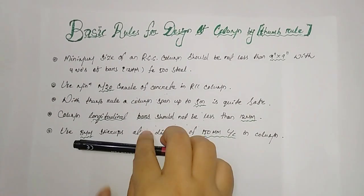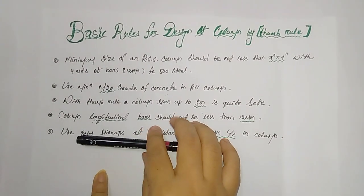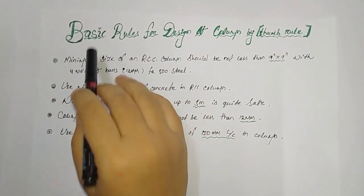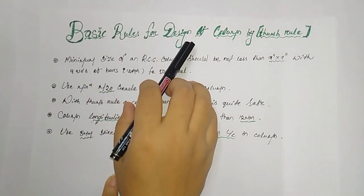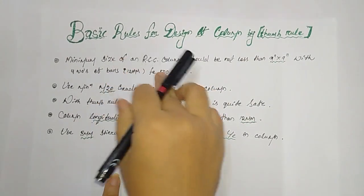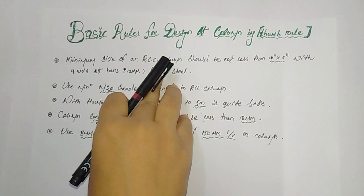Hi everyone, welcome back to Civil Engineers YouTube channel. Today I'm with the topic: basic rules for design of column by using thumb rule, which is a most basic and also important topic every engineer should know.